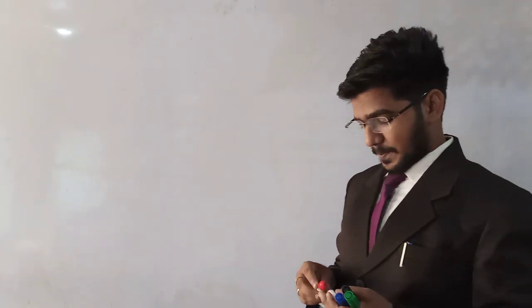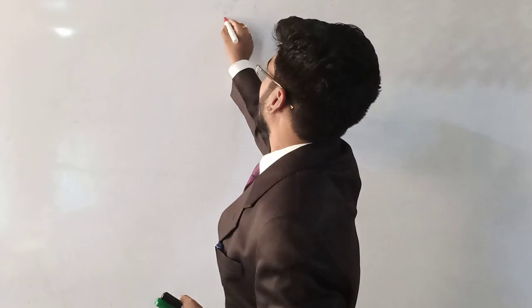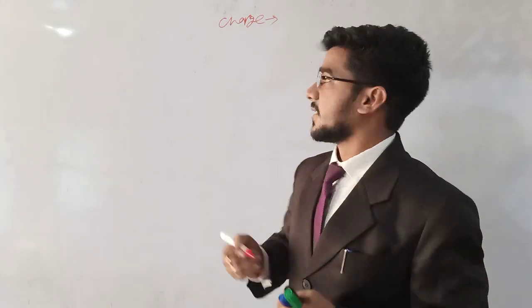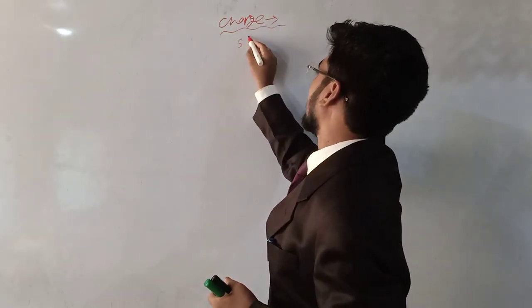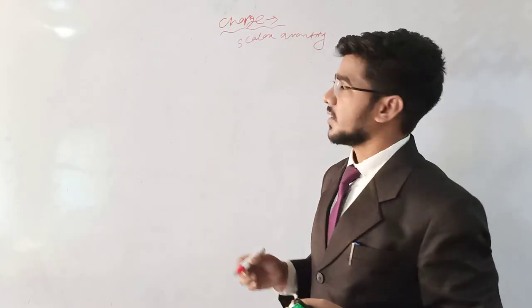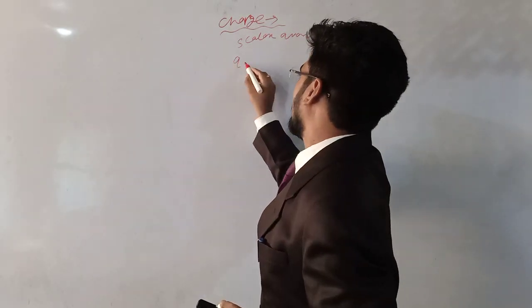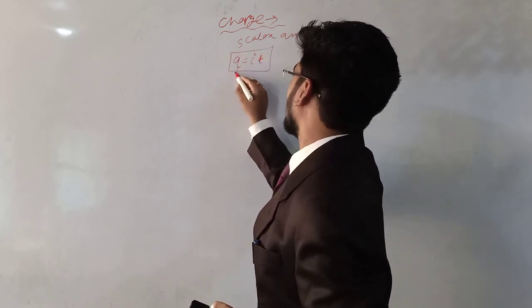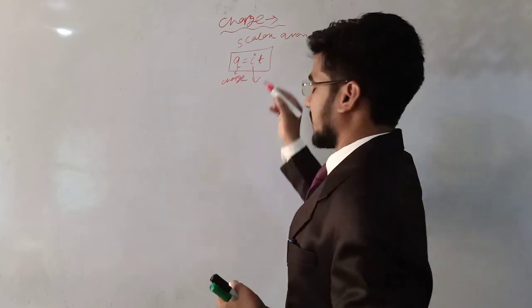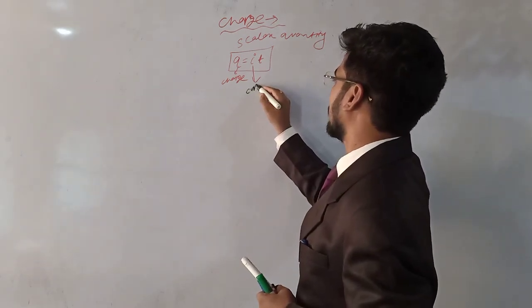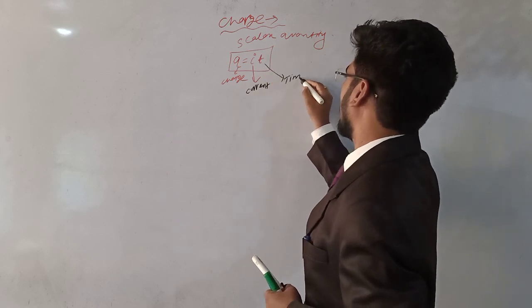Now let's discuss the nature and properties of charge. Charge is a scalar quantity. The formula of charge is Q = IT, where Q stands for charge, I stands for current, and T stands for time.